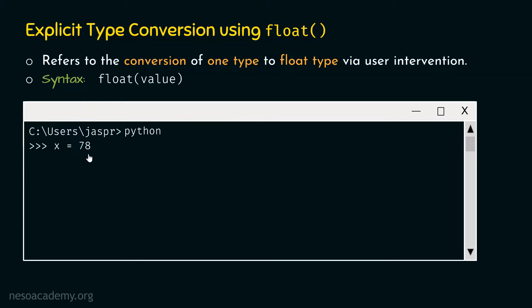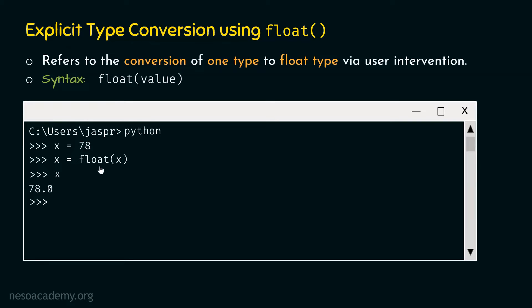Type the command x = 78. With this command, we are asking Python to make variable x point to value 78. Hit enter. Now type x = float(x). We want to convert the type of this value to float, so we are providing x which holds 78, and asking Python to convert it to float. If we type x and hit enter, we get 78.0 as a result, because float converts integer 78 to 78.0.